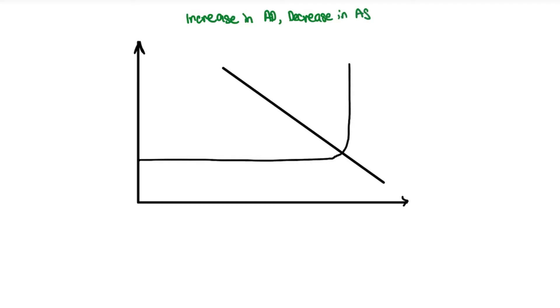We're going to be looking at what happens in the case of a macro diagram. It's actually very similar to micro. First of all, you want to label your diagrams. You have GPL which is your y-axis and your real GDP which is your x-axis, similar to your price and your quantity respectively.